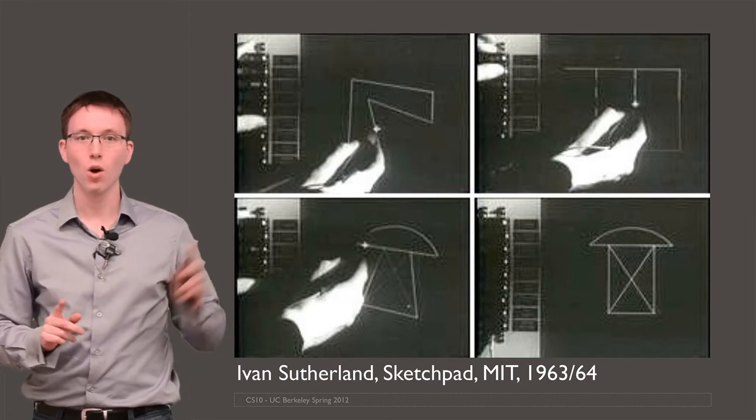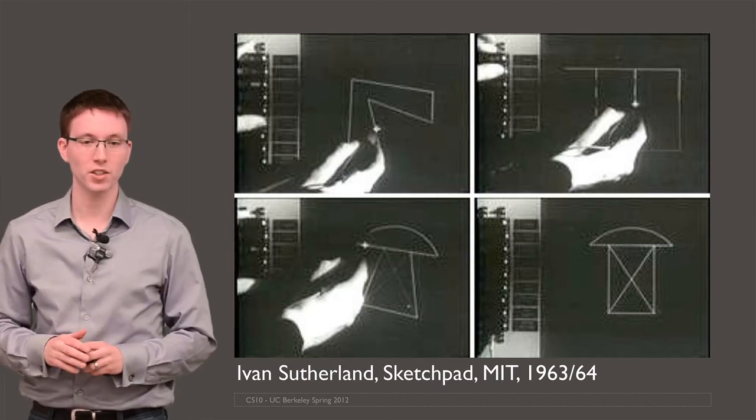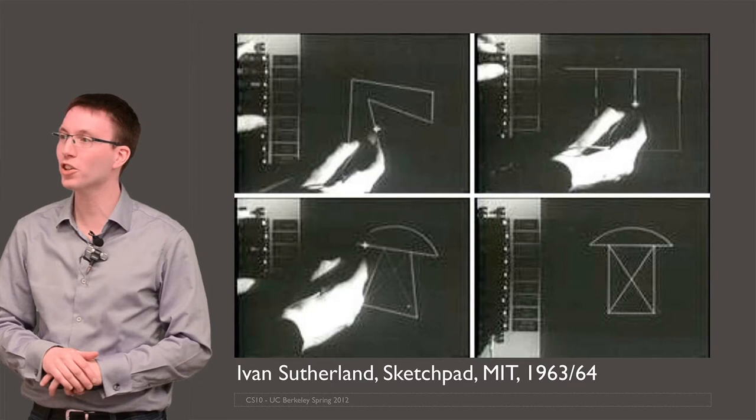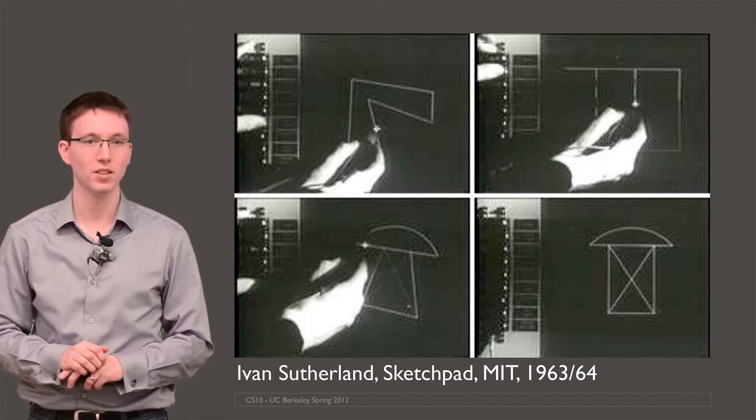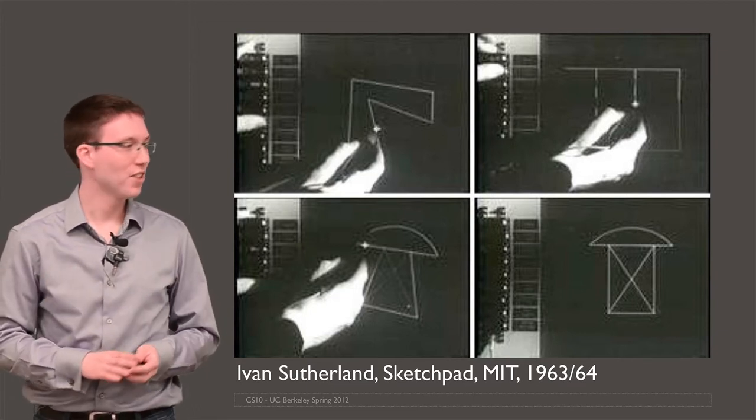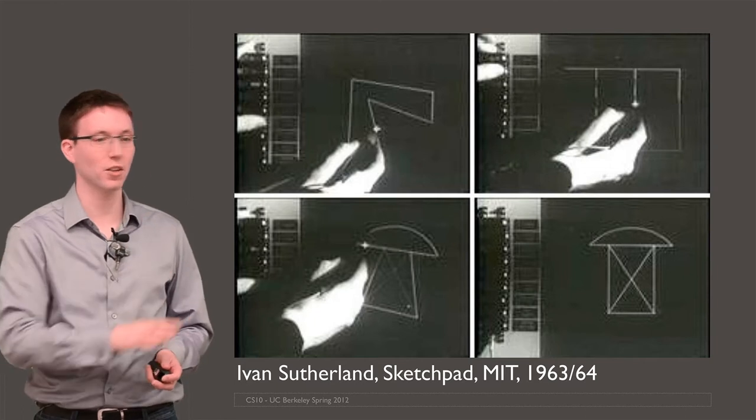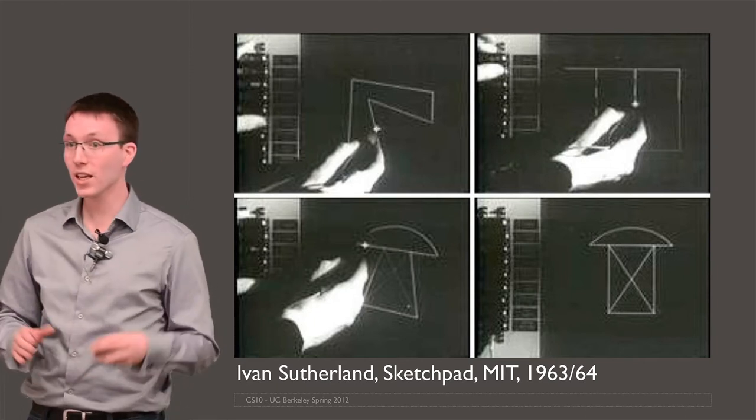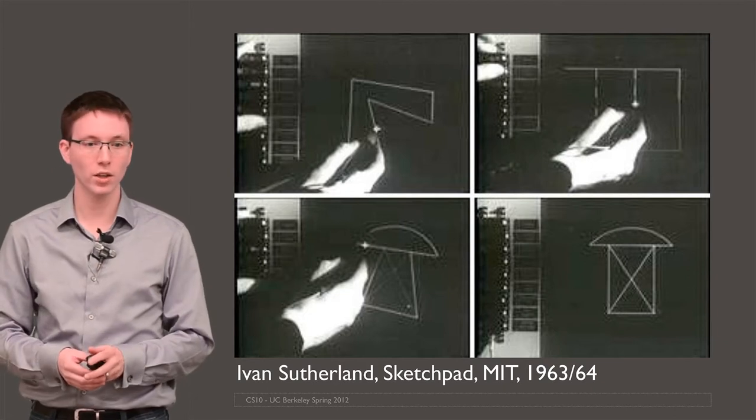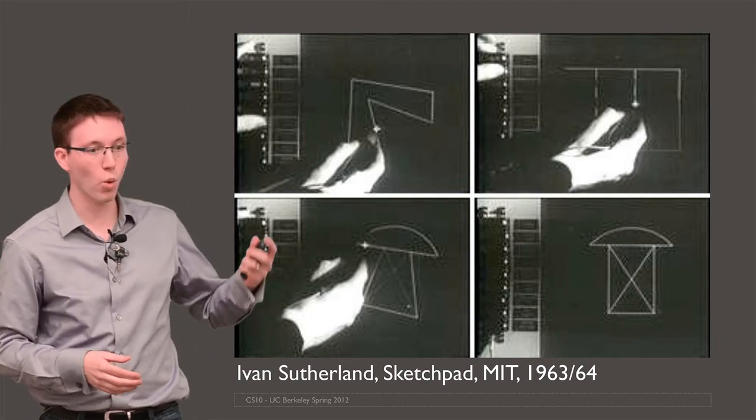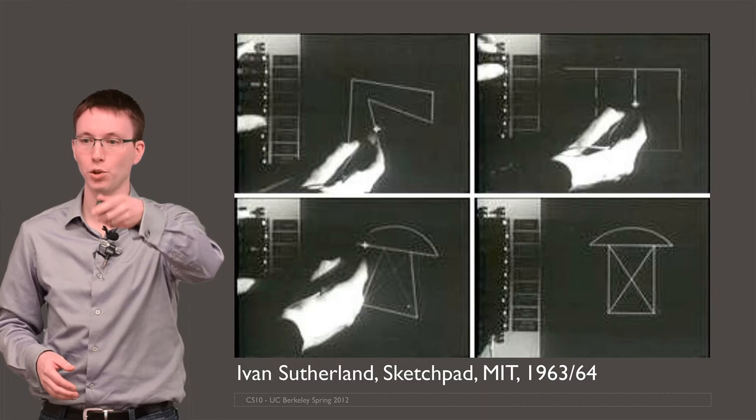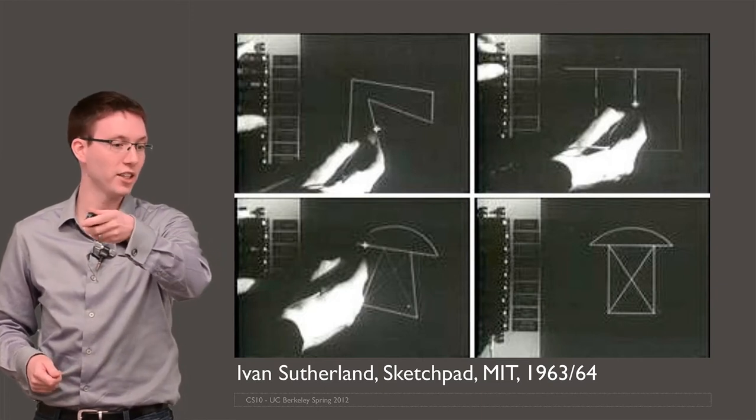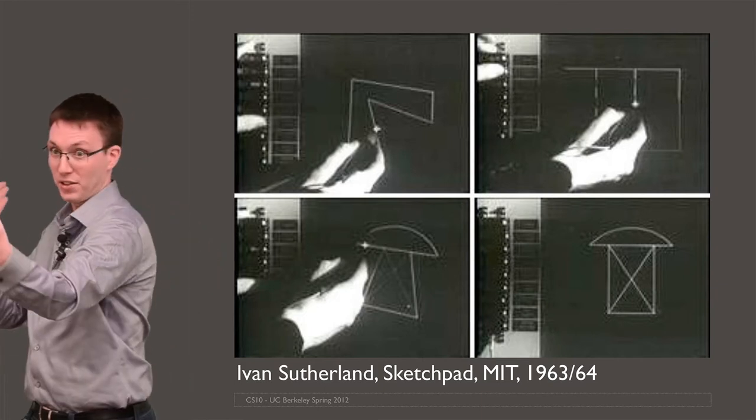Actually, it turns out one of these design choices is one that we don't see much of these days. And that's the input device. The input device from Ivan Sutherland was the light pen. And the light pen was a pen with a wire that you would just hold up to a vertical CRT, a cathode ray tube, one of the big deep screens.